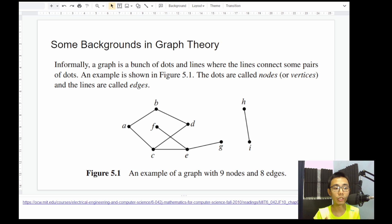So graph theory is actually a very useful field of mathematics where we study the relationship between one another. In this case, figure 5.1 is an example of a graph with nine nodes and eight edges. What that means is nodes are the dots and edges are the connections in between.